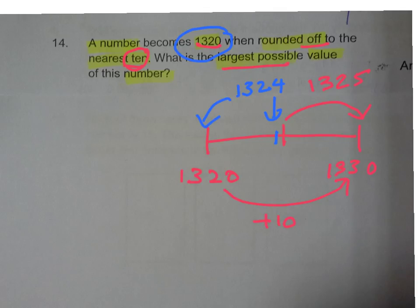It still gives us 1320. So your answer is 1324, the largest possible number that rounds to the nearest tenths to give us 1320.